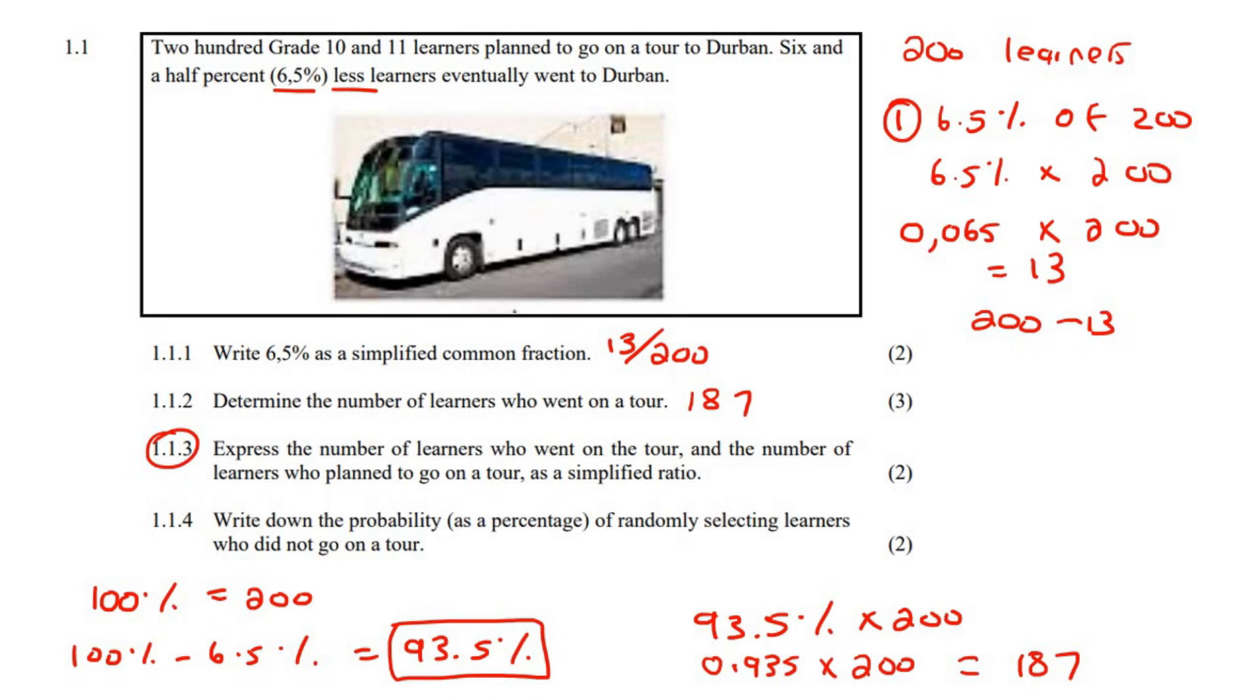This question says, express the number of learners who went and the number of learners who planned as a, oh, so you've got to read this one carefully, as a simplified ratio. So it's not saying the 13 and the 187. That's what your mind, or that's what my mind, jumped to automatically. But they said, express the number of learners who went on the tour. So that's 187. And the number of learners who planned, or who, how many planned? 200 planned. There we go. Now, normally we would try to simplify this as far as possible. They even said over here, simplified. But you cannot simplify that any further. There is no number that can go into this one and this one at the same time. So we will leave that as our answer. 187 to 200.